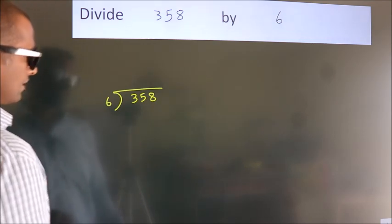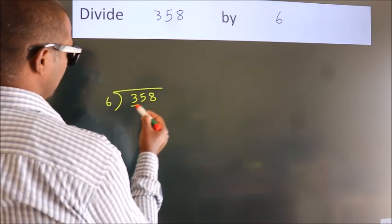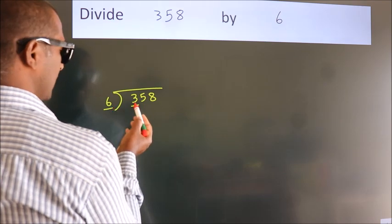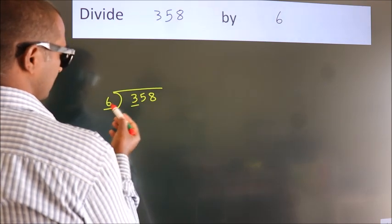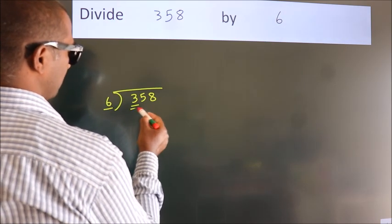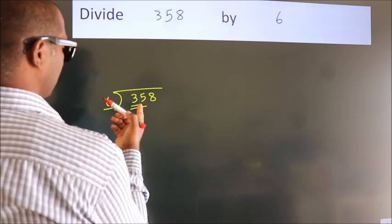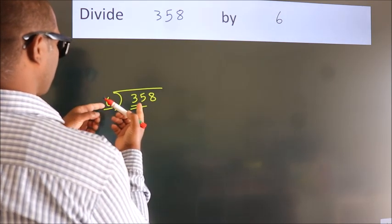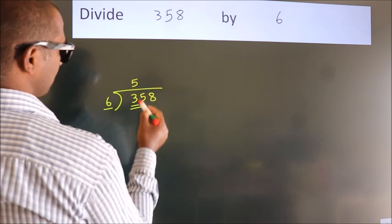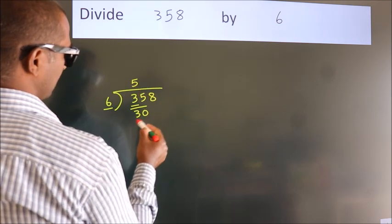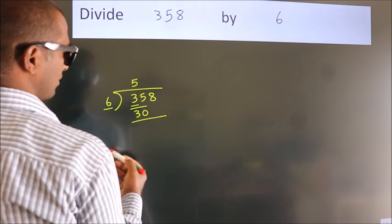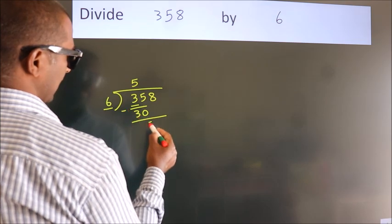Next, here we have 3, here 6. 3 is smaller than 6, so we should take 2 numbers: 35. A number close to 35 in the 6 table is 6 fives, which is 30. Now we subtract and get 5.